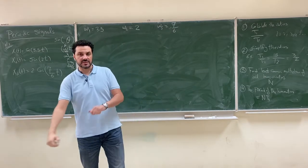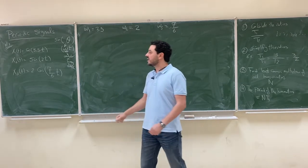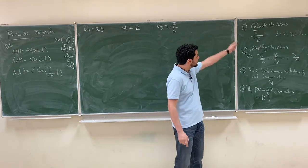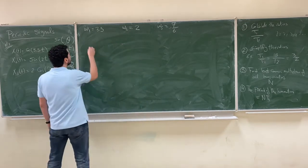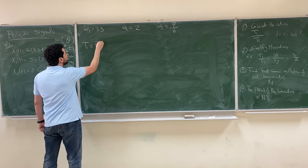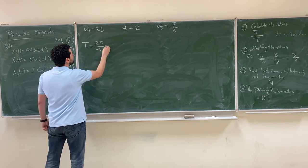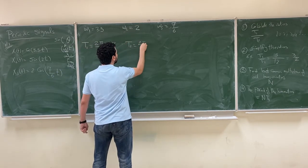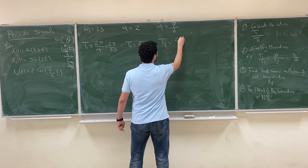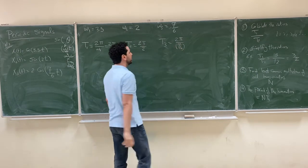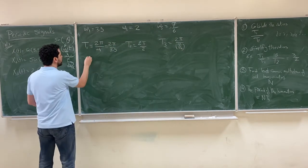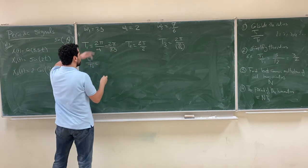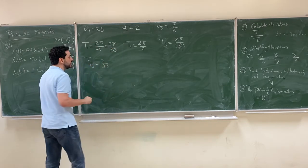We need to calculate the periods in order to know if the summation of these three signals is periodic or not. The period is related to angular frequency as T₁ = 2π/ω₁ = 2π/3.5, T₂ = 2π/ω₂ = 2π/2, and T₃ = 2π/(7/6). We then calculate the ratio T₁/T₂, which is (2π/3.5) / (2π/2), giving 2/3.5.